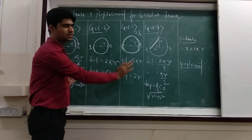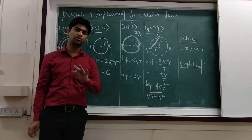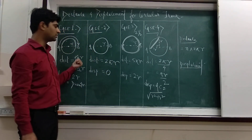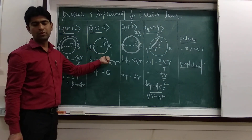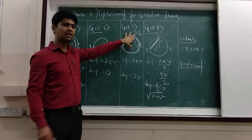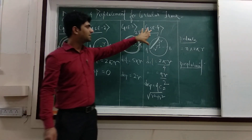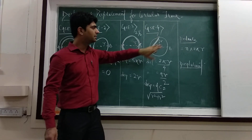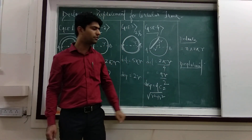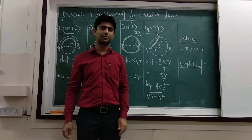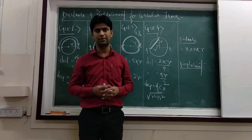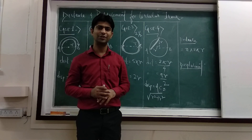With these basic 4 cases you can solve any numerical based on circular track motion. Case 1 was the half circle, case 2 was the full circle of one revolution, case 3 is the case of multiple revolutions where the number may vary depending on the question, and case 4 is the quarter circle. The general formula for distance is n into 2πr, where n is the number of revolutions. Displacement depends on the circumstances. Thank you so much, see you in the next class.